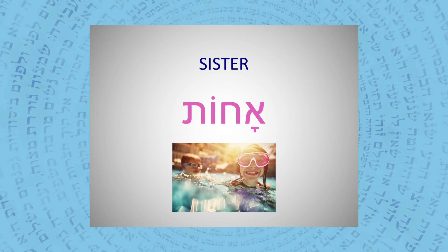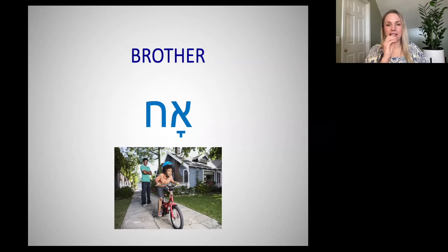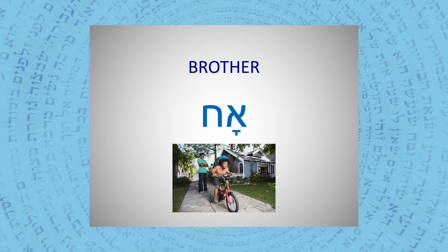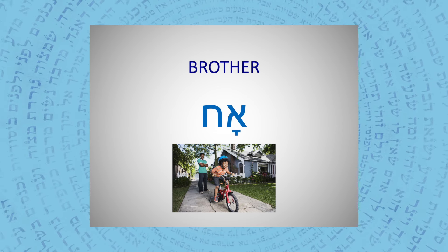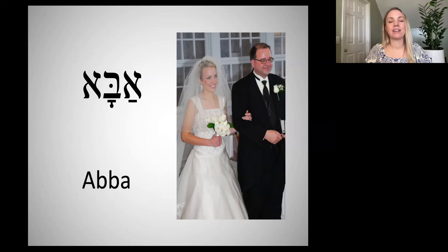What if I wanted to say 'I do have a brother'? Remember, we need to literally say 'there is, to me, a brother' — yesh li ach. What if I wanted to say 'I have a father'? This is actually a picture of my wonderful dad and I on my wedding day. Yesh li abba. And of course you can make the sentence more complex. If I wanted to say 'I have a good father,' I would say 'yesh li abba tov.' Remember in Hebrew, we put the adjective after the noun — yesh li abba tov.